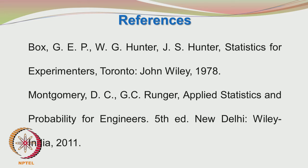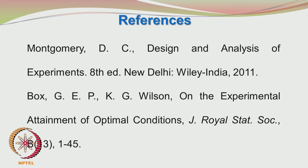The prescribed textbook is Montgomery and Runger, Applied Statistics and Probability for Engineers, 5th edition, Wiley India 2011. There is also the more detailed book on Design of Experiments by Montgomery, Design and Analysis of Experiments 8th edition, New Delhi, Wiley India 2011. There is also the reference to the paper by Box and Wilson on the Experimental Attainment of Optimal Conditions, Journal of Royal Statistical Society 1951.